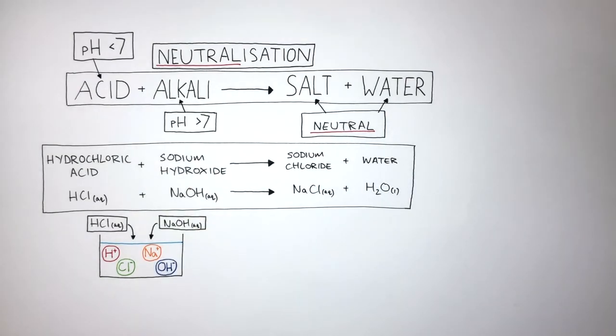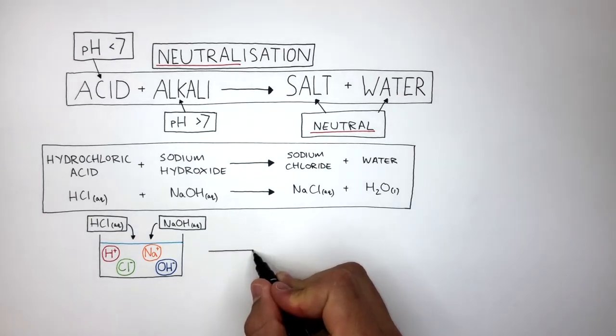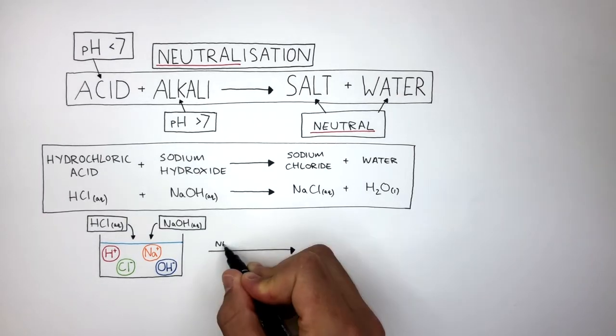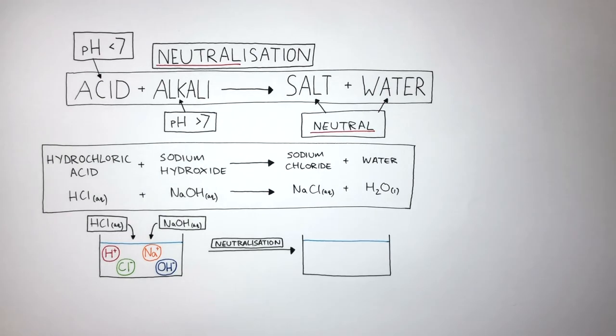The hydrogen ions make the solution acidic and the hydroxide ions make the solution alkaline. These reactants then react where neutralization takes place. Neutralization is when the hydrogen ion forms a covalent bond with a hydroxide ion forming a water molecule.